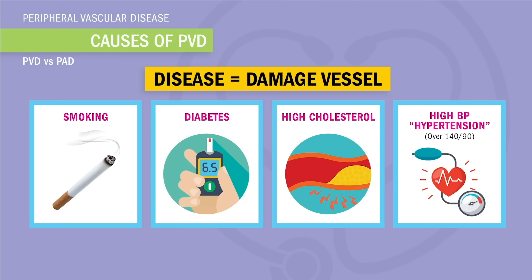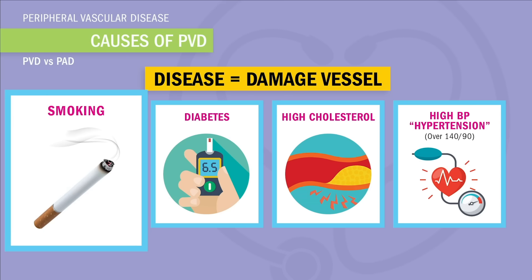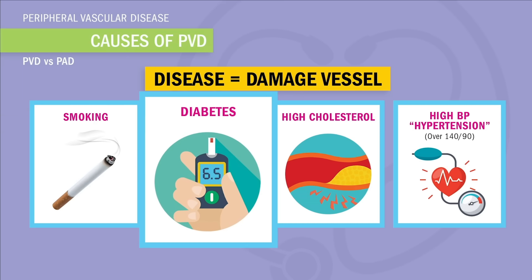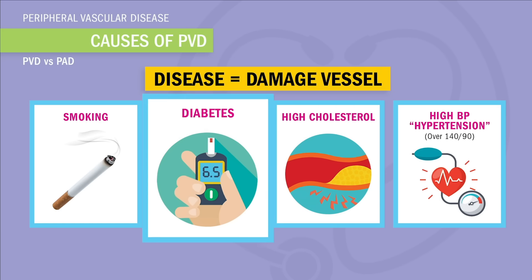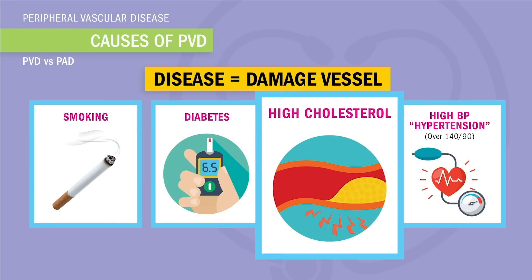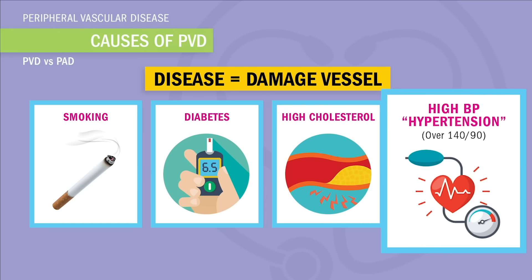The causes of vascular disease are anything that damages vessels: smoking, which scars the lining of blood vessels; uncontrolled diabetes, where the blood turns to mud with all that sugar, tearing and stretching those blood vessels; high cholesterol over 200, where cholesterol sticks to vessel walls making them stiff and hard; and years of chronic high blood pressure — hypertension — over 140/90, which adds so much stress and pressure, eventually stretching and causing small tears in the vessels.